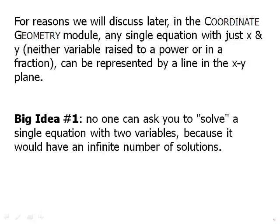So the first big idea is, no one can ask you to solve a single equation with two variables because it would have an infinite number of solutions. A line passes through an infinite number of points, and every single one of those points is a solution. So there's no way anyone could legitimately ask you to solve, because they'd be asking you to solve for an infinity of things all at once.